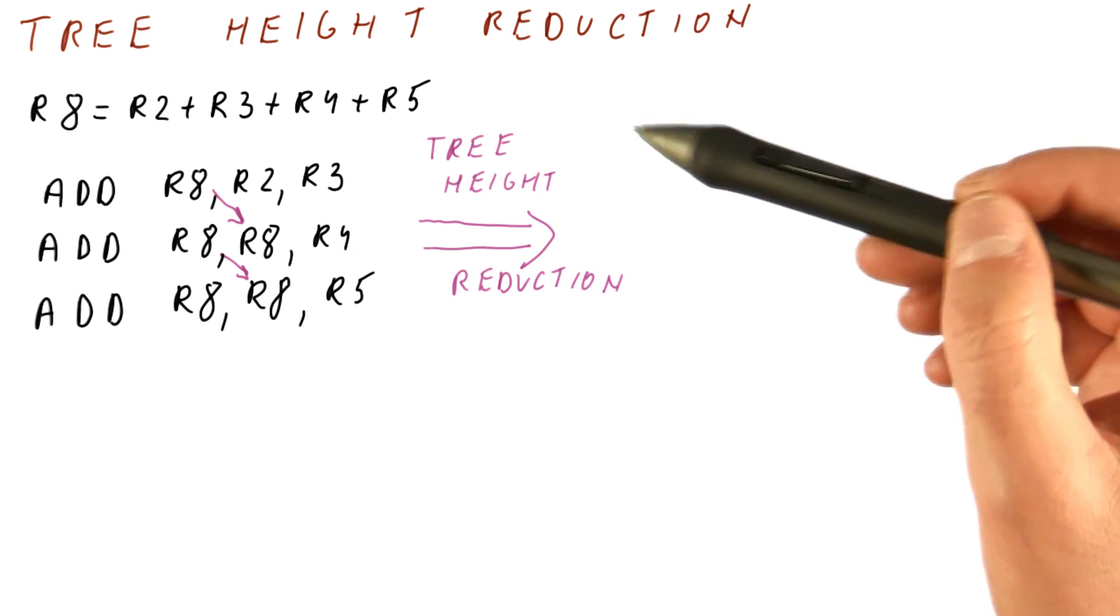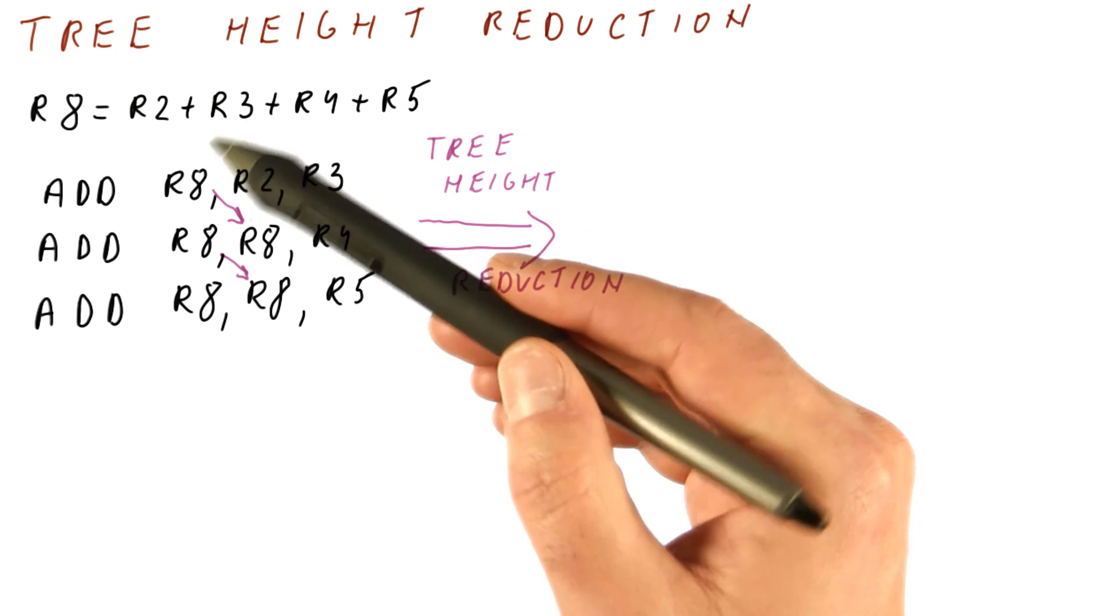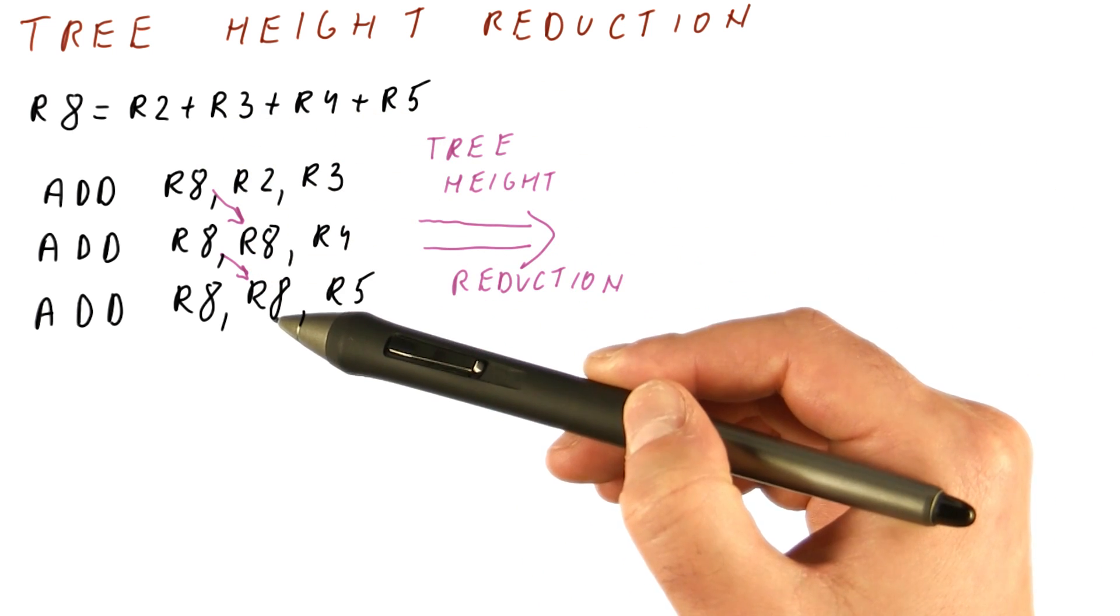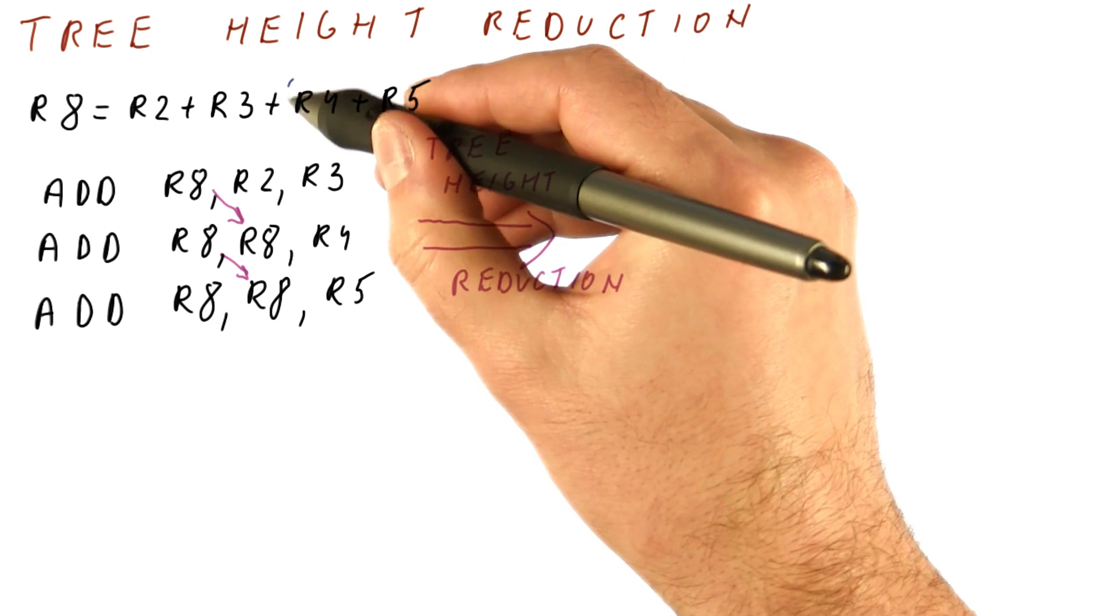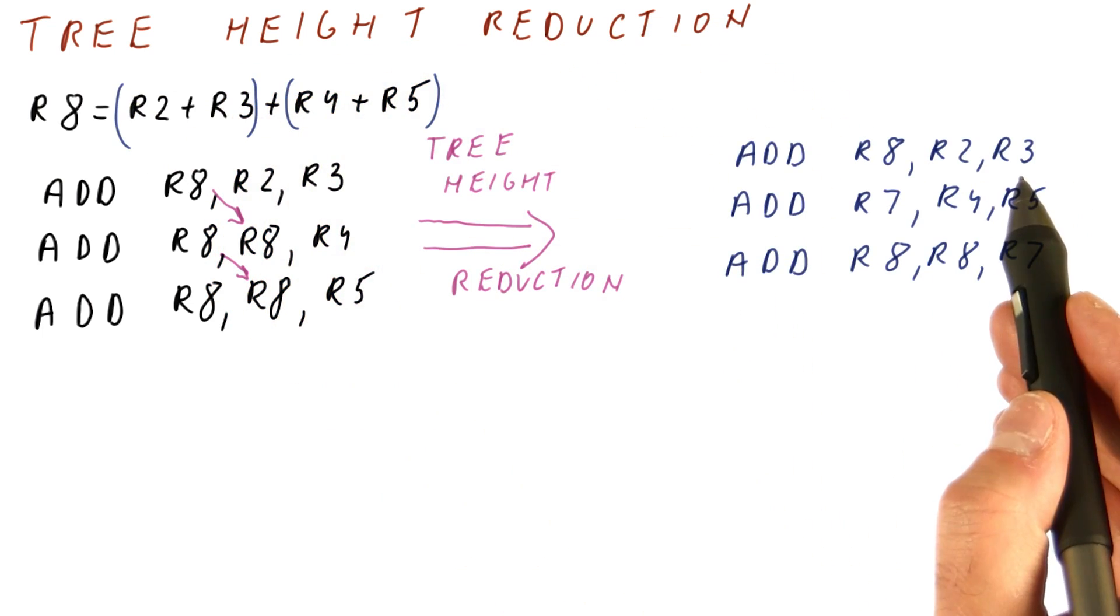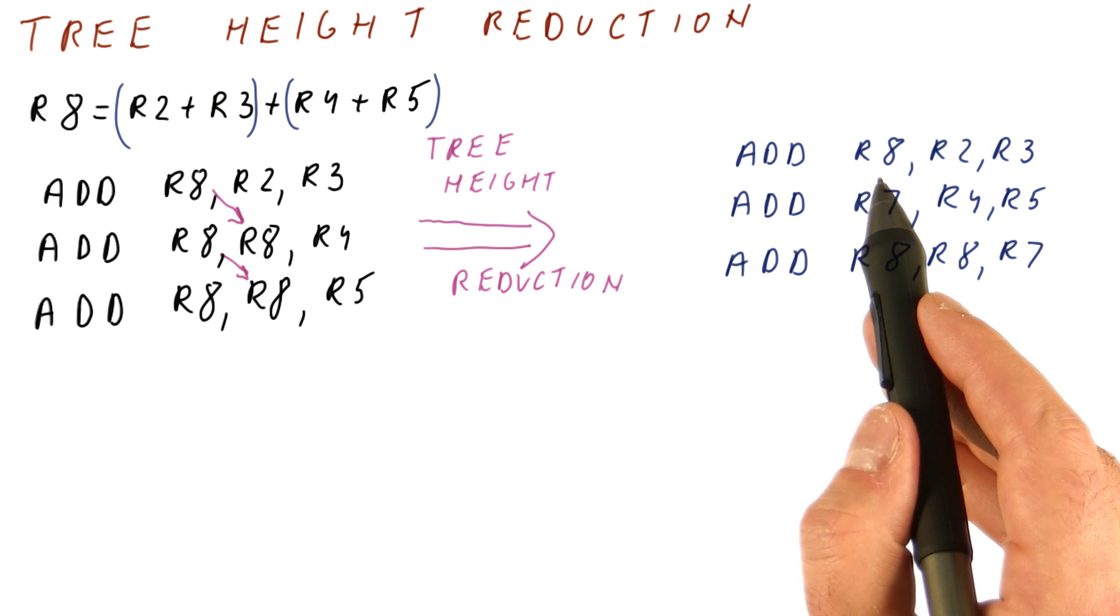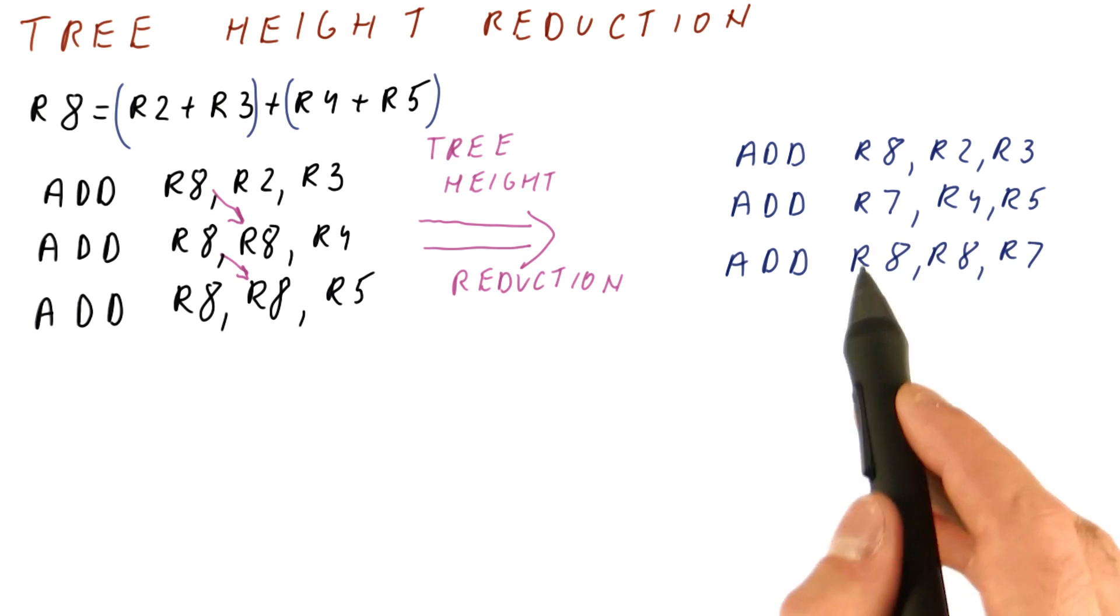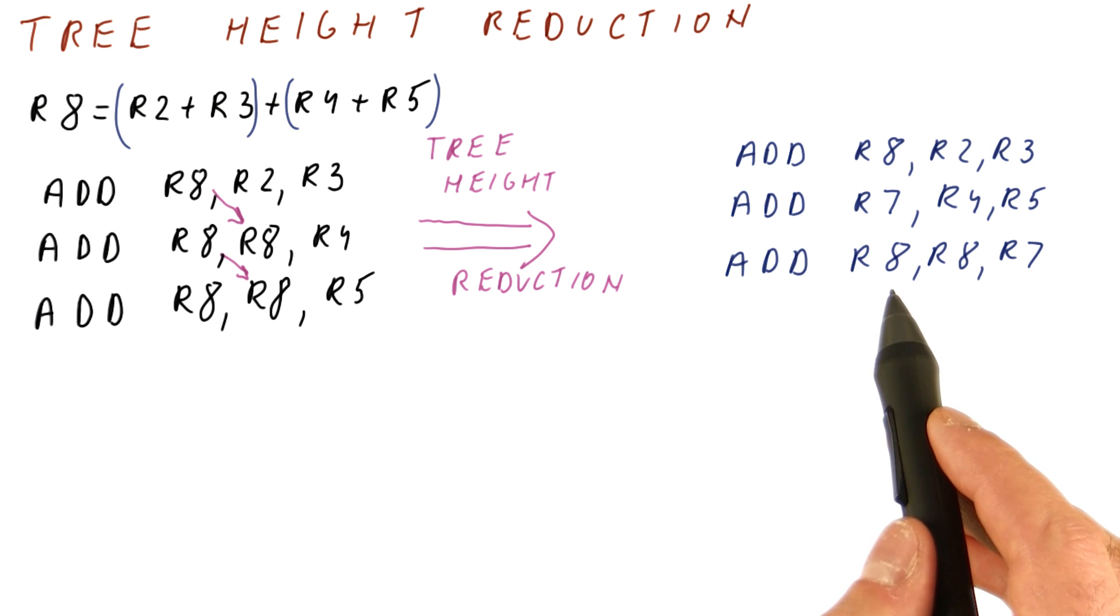So tree height reduction works as follows. The compiler figures out that instead of adding one number at a time to the sum and thus creating a chain of dependencies, what we can do is we can group the computation this way. We first add the first two numbers and put that in R8, then we add the second pair of numbers, put that in R7, and then we add up the R8 and R7 into our final result, R8.